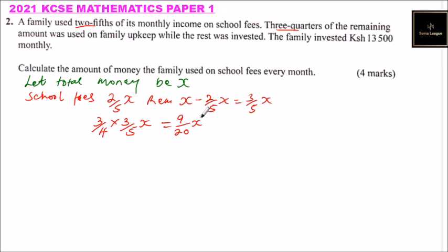The family invest, the rest was invested. So the remainder is, since we had 3 over 5 X, 3 over 5 X, that is what remained after school fees. So this is upkeep. You minus what was used for upkeep, 9 divided by 20 X.